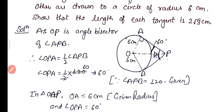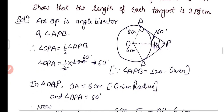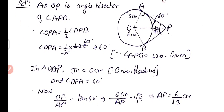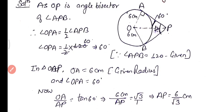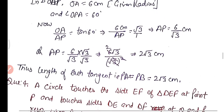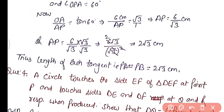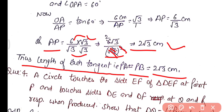In triangle OAP, with angle OPA = 60 degrees and OA = 6 cm: OA is perpendicular and AP is the base, so OA/AP = tan 60 degrees = √3. Therefore AP = 6/√3. Rationalizing: AP = 6√3/3 = 2√3 centimeters. Thus the length of each tangent PA = PB = 2√3 centimeters.